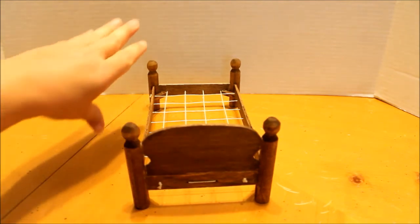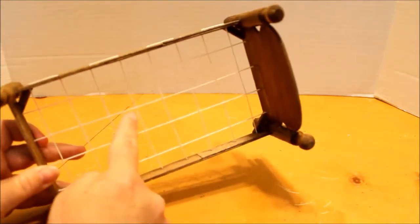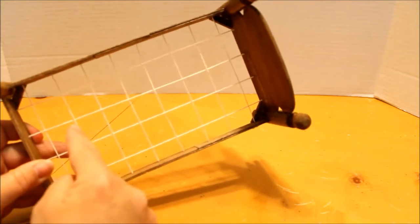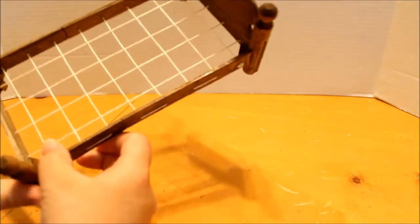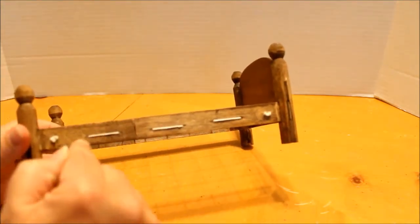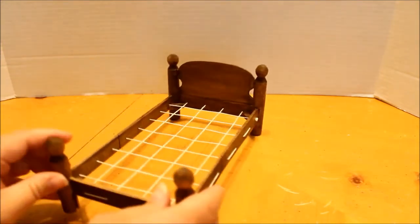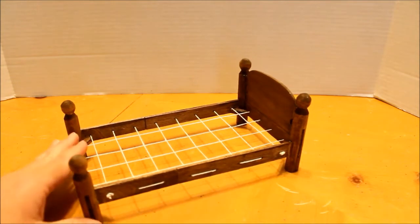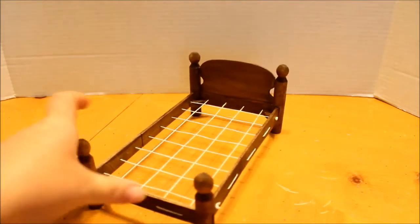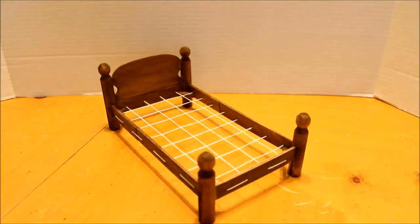I also used some string to make the rope supports like Addie would have had on her bed at the time, and to make the holes for it I did use a drill with a very small drill bit. I used a combination of tacky glue or hot glue and for the color I used watercolor to stain the bed. I wanted the wood to still show through so I wanted more of a stain rather than paint for this project.